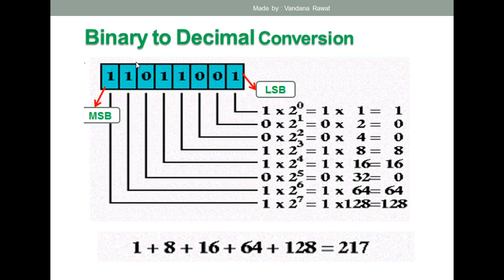Just like that, if you want to convert any hexadecimal number into decimal, you have to multiply that hexadecimal number with the exponents of 16. Then you take the summation of all those products, and that summation will be your decimal equivalent.